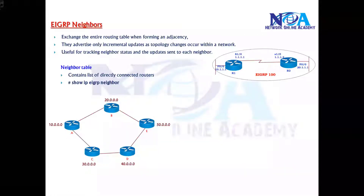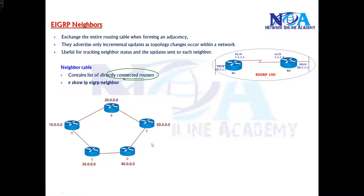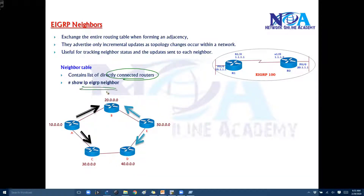EIGRP maintains different tables. The first one is the neighbor table, which contains information about your directly connected routers. For example, in this topology, Router A has two neighbors: Router B and Router C. Similarly, Router E has two neighbors: Router B and Router D. To verify this neighborship, we can use a command called 'show ip eigrp neighbors'.